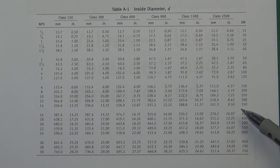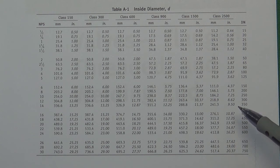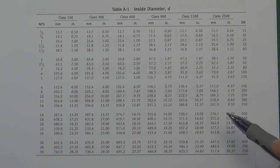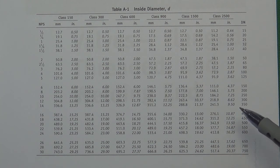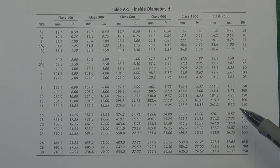These tables are very important for engineers. If you are a design engineer, you use this table to design a valve. If you are an application engineer choosing a valve, you will know the real inside diameter of a valve designed by ASME B16.34. This is a very important table about valve inside diameter in ASME B16.34.